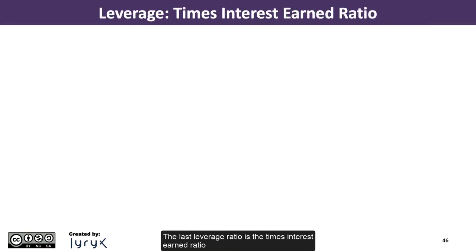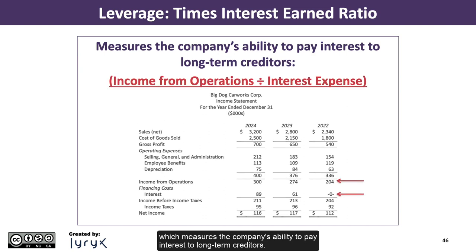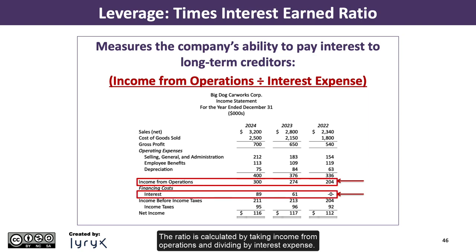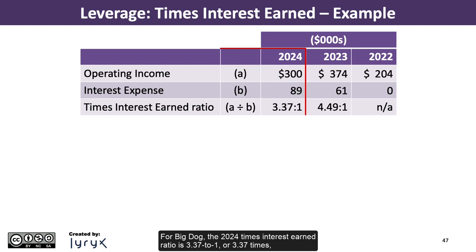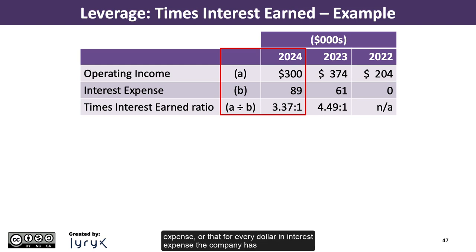The last leverage ratio is the times interest earned ratio, which measures the company's ability to pay interest to long-term creditors. It is calculated by taking income from operations divided by interest expense. For Big Dog, the 2024 times interest earned ratio is 3.37 to 1, or 3.37 times, calculated as $300,000 in income from operations divided by $89,000 in interest expense. This means Big Dog generates operating income 3.37 times its interest expense — for every dollar of interest expense, there is $3.37 in operating income to cover it.